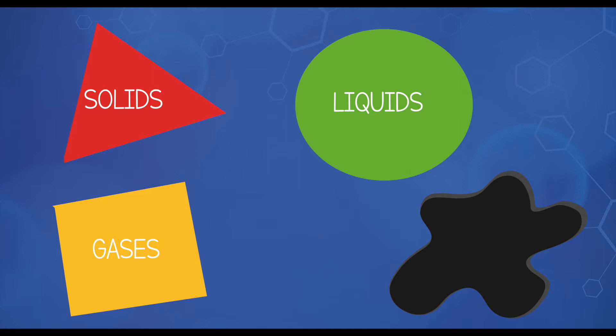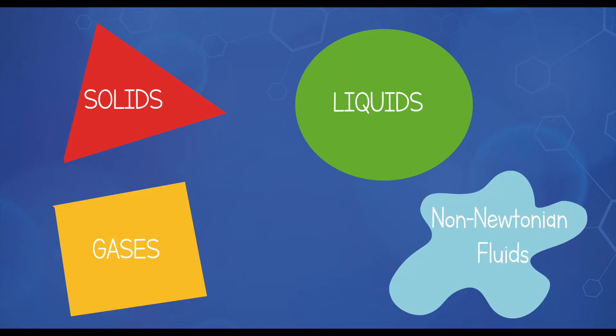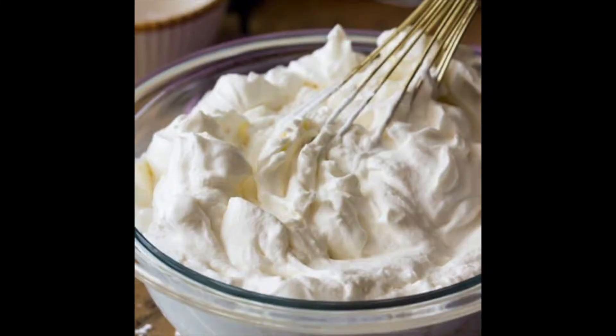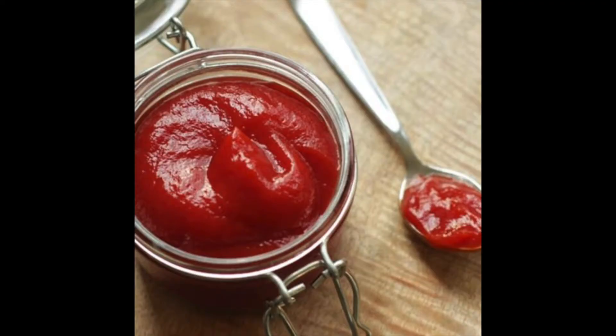Non-Newtonian fluids — like honey which gets runnier if you stir it, or like cream where you whip it and it becomes less and less like liquid, and ketchup which flows more freely when stressed — you need to shake the bottle to put some on your chips. And today we're going to create our own non-Newtonian fluids.